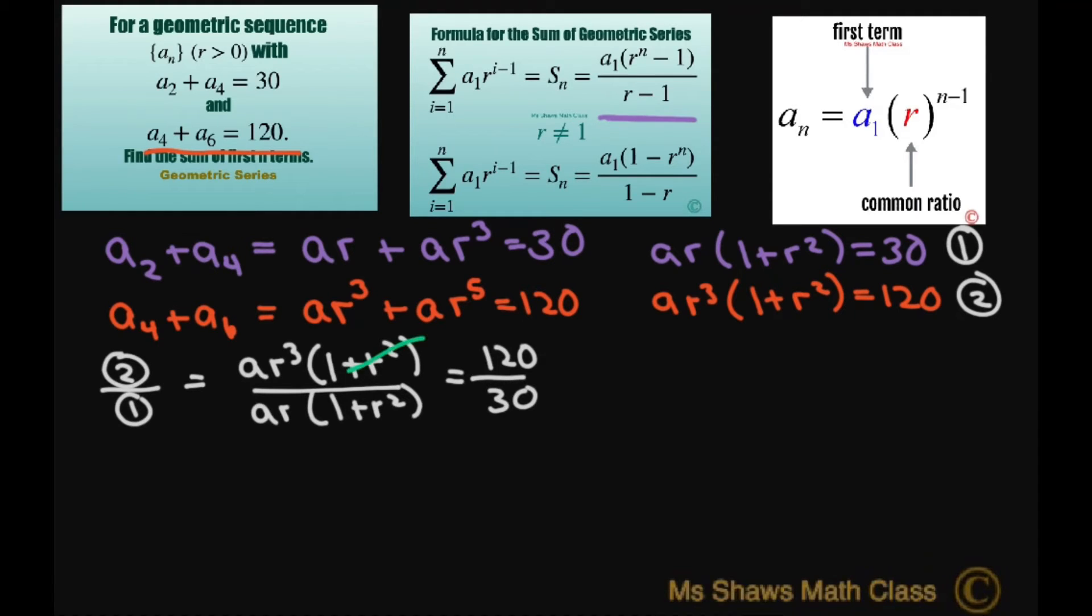Alright, so this cancels. The a's cancel and you're left with R². And R² is going to equal 4. That means R, and R has to be positive, so R is going to be 2.